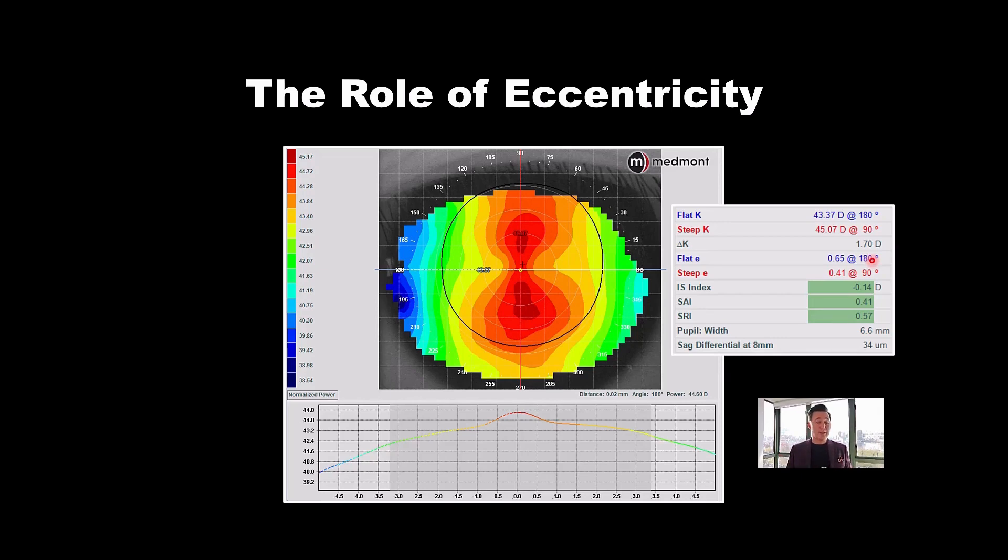So median with your Medmont is 0.67. When I looked at, I think it was about 300 or 400 eyes, we found the median eccentricity on the flat meridian was 0.67.